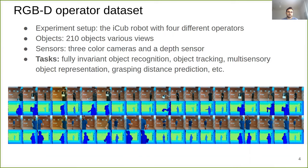In this data set, an operator will pick up an object and show it to the robot from various distances and various views. We propose that this data set can be employed for fully invariant object recognition, object detection, and grasping distance prediction in human-robot interaction scenarios.